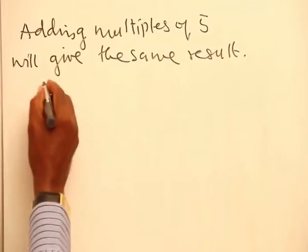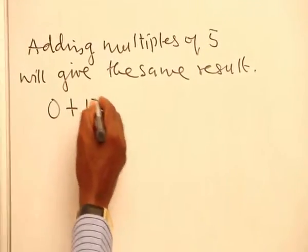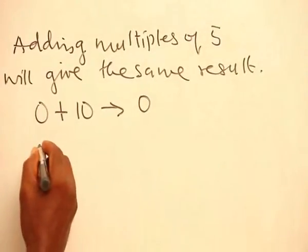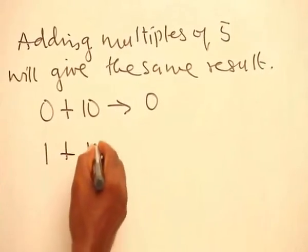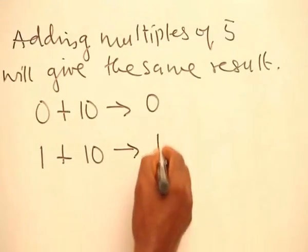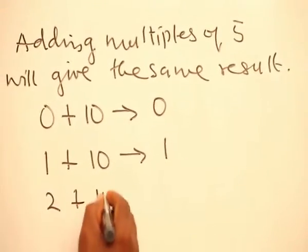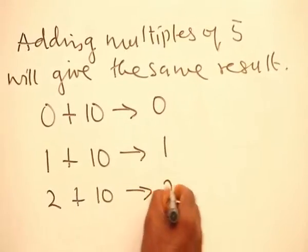For example, 0 plus 10 will also be 0. 1 plus 10 will also be 1. 2 plus 10 will remain as 2.